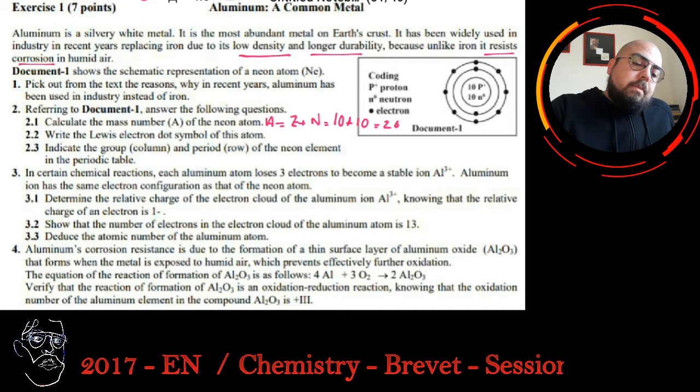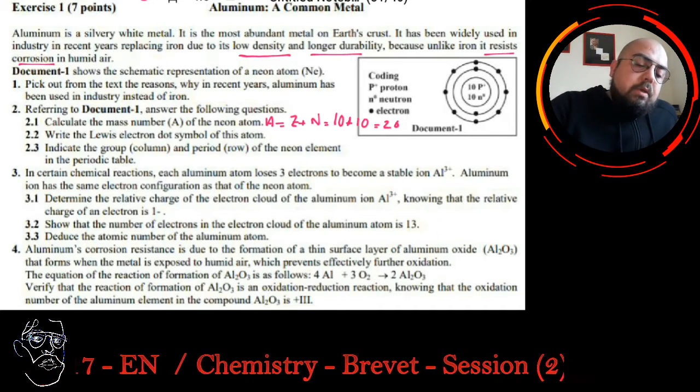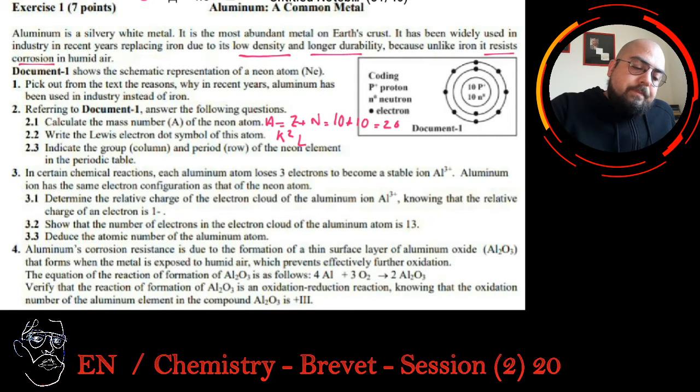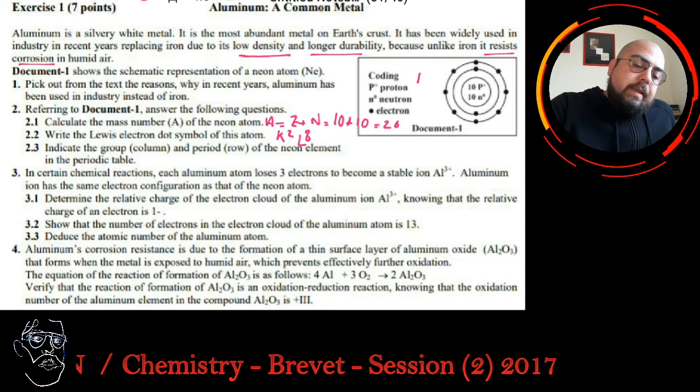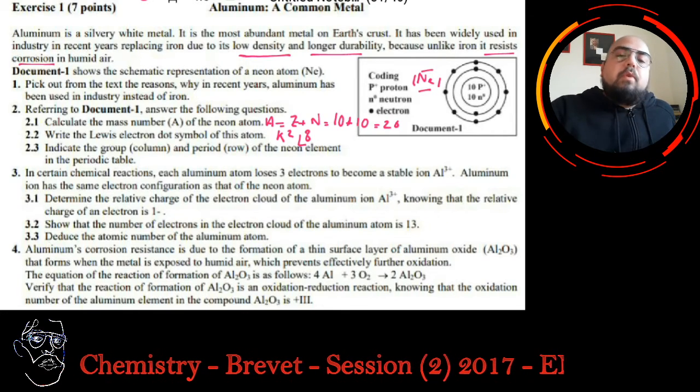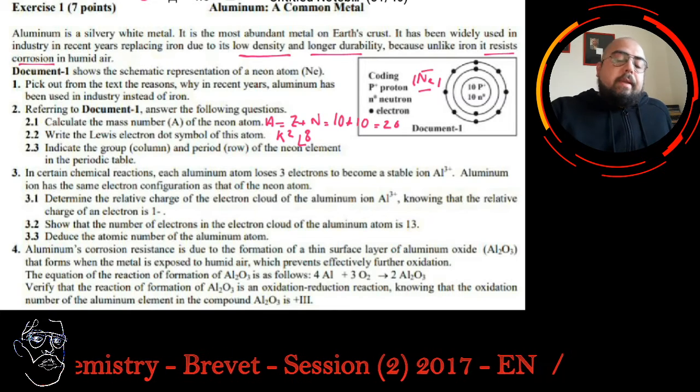Write the Lewis electron dot symbol of this atom. In order to do the Lewis representation, you need electronic configuration, which is K2L8. From here we can deduce that Ne has the Lewis representation which is like this. It has 8 valence electrons.